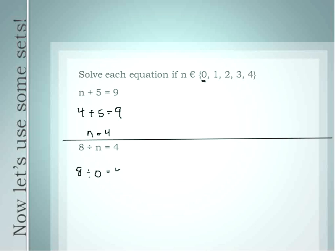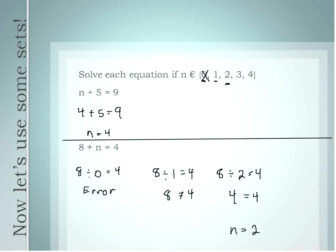8 divided by 0 is equal to 4 — but you know you can't divide a number by 0, so plugging it into your calculator will give you an error. That one is not right. Let's go on to 1: 8 divided by 1 is equal to 4 — but 8 divided by 1 is actually 8, which is not equal to 4. Moving on: 8 divided by 2 is equal to 4, and 8 divided by 2 actually is equal to 4. So in this case, n is equal to 2.